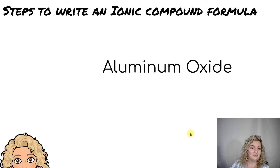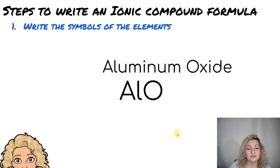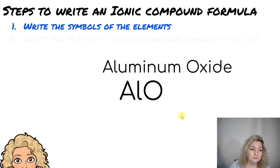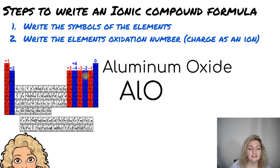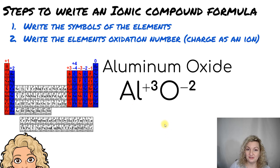Let's try one more. We're going to do aluminum oxide. Again, we're going to start with our symbols. Aluminum is Al. Oxide is really oxygen, so it's O from the periodic table. We're going to go ahead and look at our oxidation numbers. Aluminum is right here, which is a positive three charge. And then oxygen is right here, and that is a negative two charge. So we're going to go ahead and include those now.